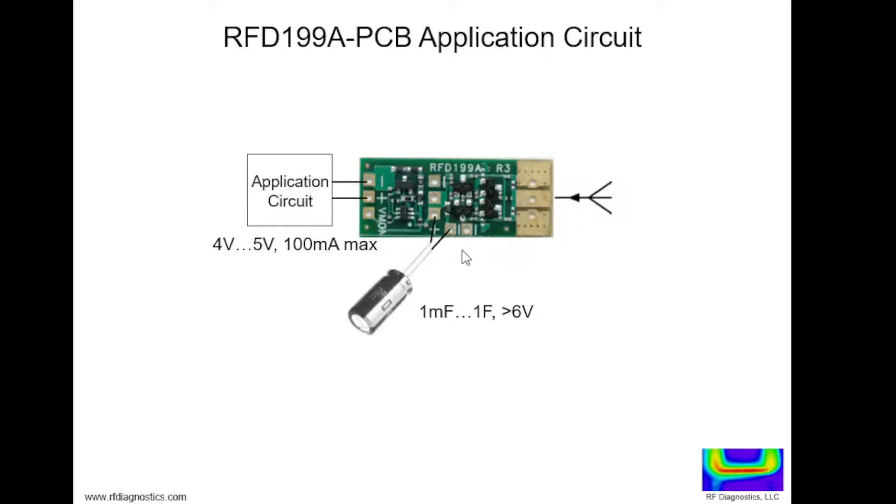You then select and solder in a capacitor, a large value between 1 millifarad and 1 farad with a voltage tolerance of 6 volts or greater. As the circuit receives RF energy, this capacitor will charge.